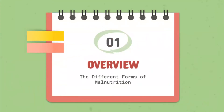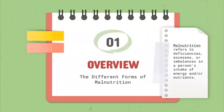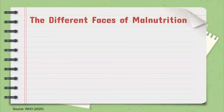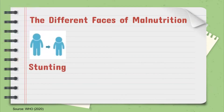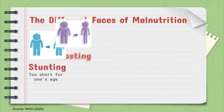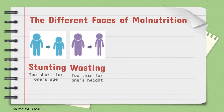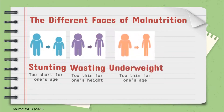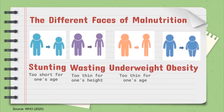A brief definition: malnutrition refers to deficiencies, excesses, or imbalances in a person's intake of energy and/or nutrients. The term malnutrition addresses four broad groups of conditions under nutrition, which includes stunting or low height for age, wasting or low weight for height, underweight or low weight for age, and obesity, which means one is having an excessive amount of body fat than normal. This means that malnutrition is multi-faceted. In this discussion, we will be focusing particularly on stunting.